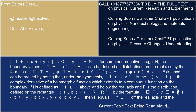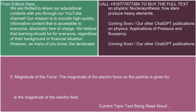4. Direction of the force. The direction of the electric force on the charged particle depends on the sign of the charge. If it's positive, the force and the electric field point in the same direction. If it's negative, the force and the electric field point in opposite directions. 5. Magnitude of the force. The magnitude of the electric force on the particle is given by |F| = q|E|, where |E| is the magnitude of the electric field.